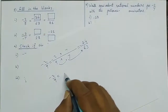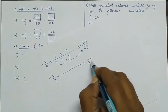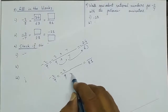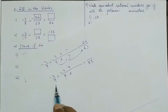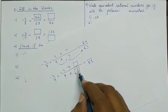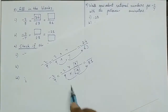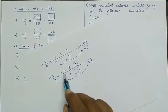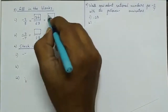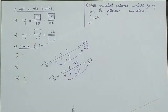Next: minus 2 upon 9 with denominator 81. We need 81 in the denominator. Since 9 into 9 is 81, we multiply 9 to numerator as well: minus 2 into 9 is 18, so the answer is minus 18.